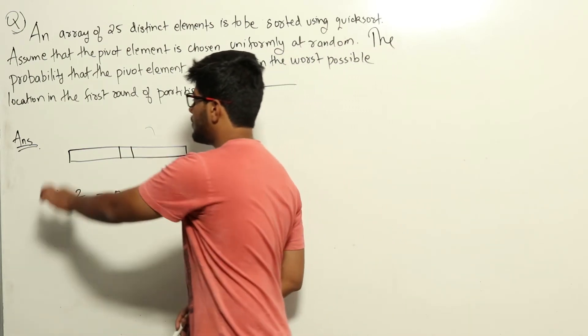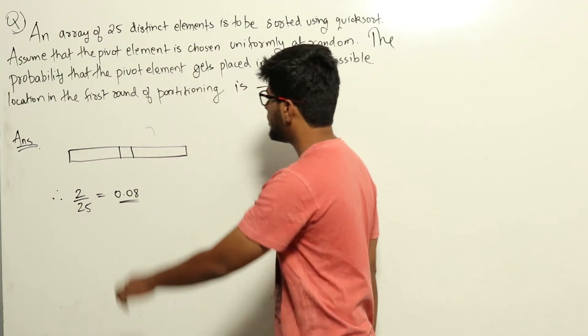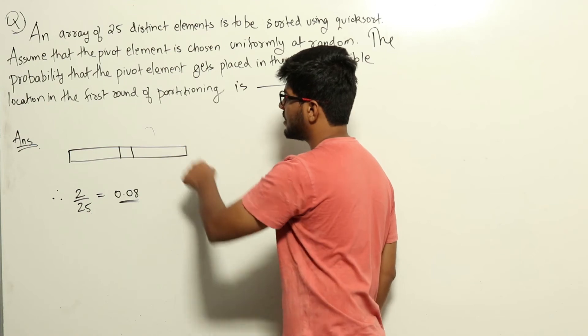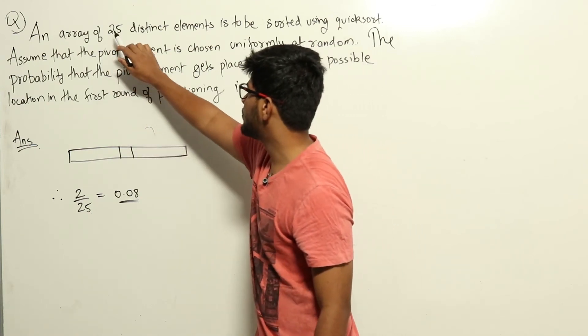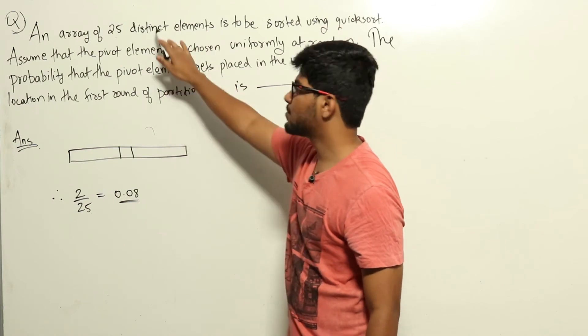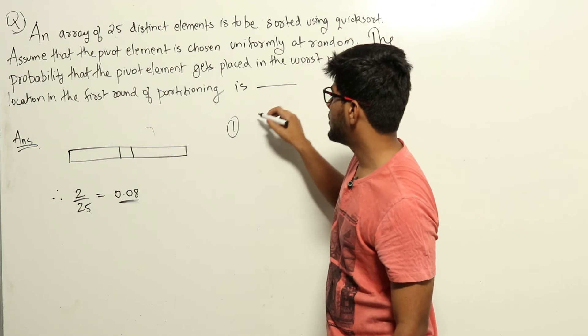The pivot element will be placed on the leftmost side if we are choosing the smallest element. Similarly, the pivot element will be on the rightmost side if we're choosing the largest element. In the question they have given 25 distinct elements, so there will only be one smallest element and one largest element.